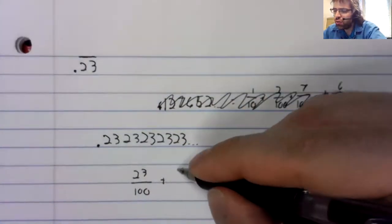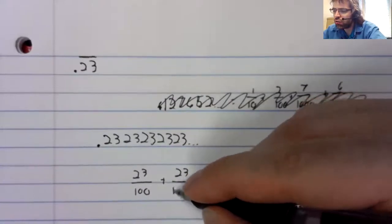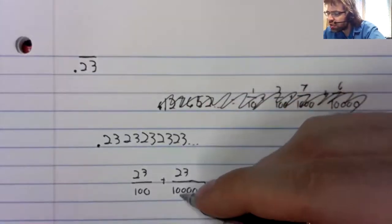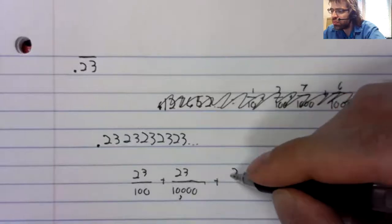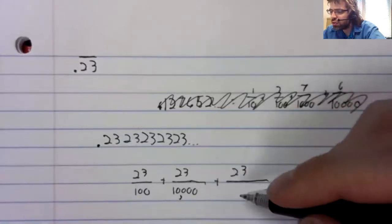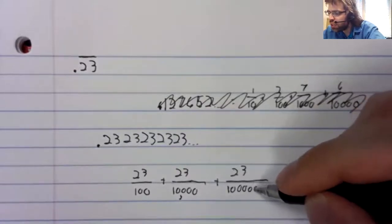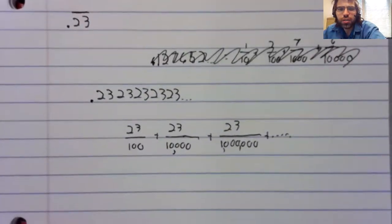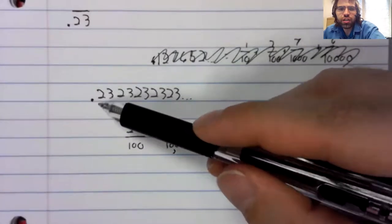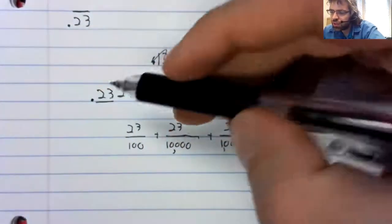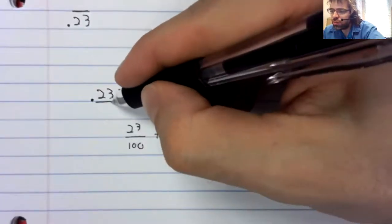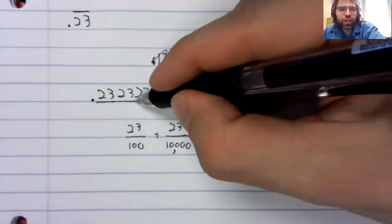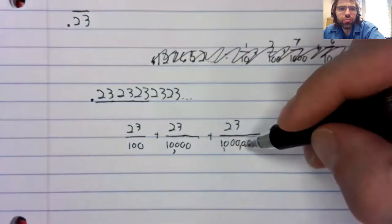This is 23 over 100 plus 23 over four zeros, 10,000 plus 23 over a million, and so on. You see, this 23 gives us two zeros. Add two more digits, two more zeros. Add two more digits, two more zeros.